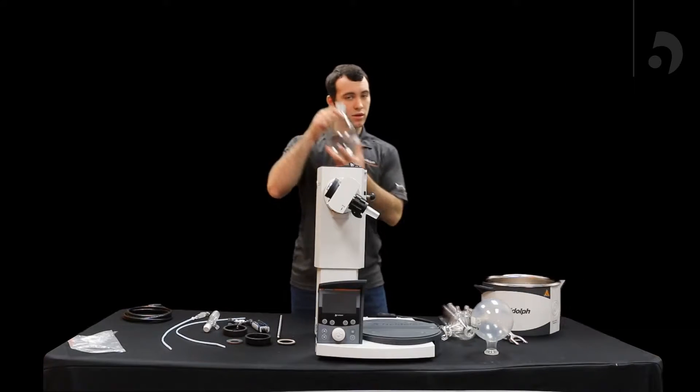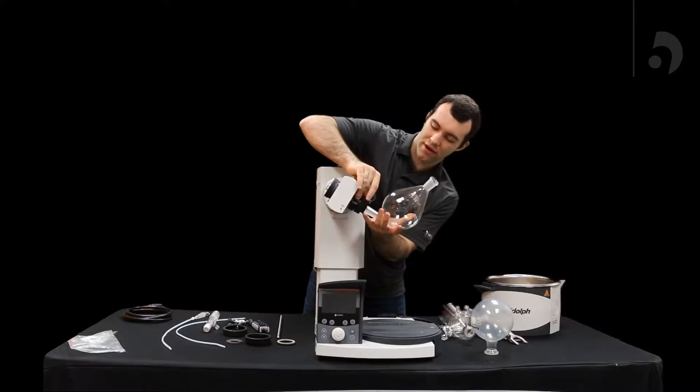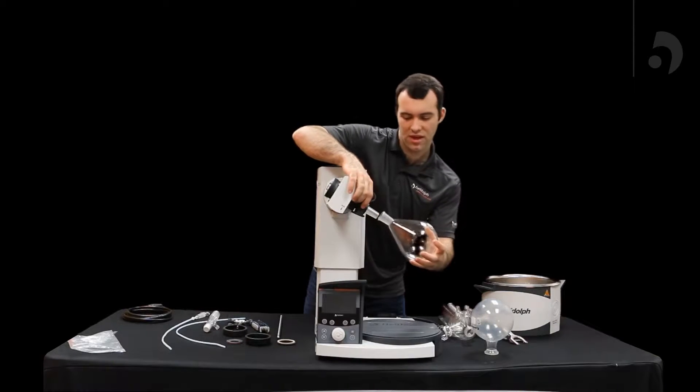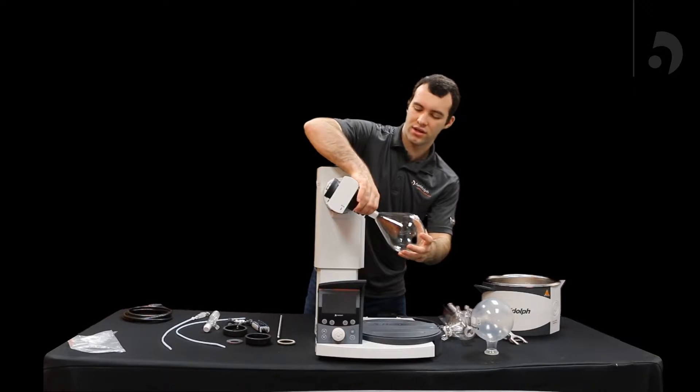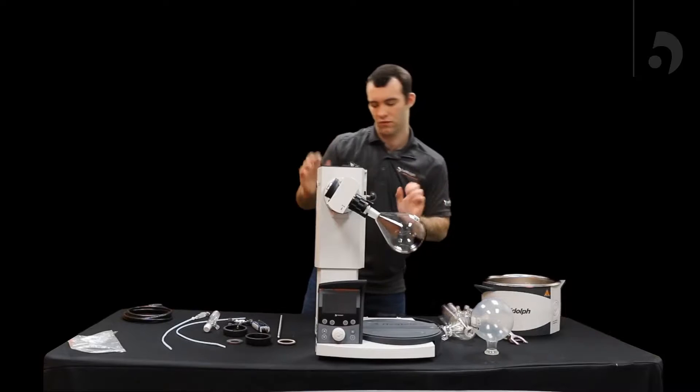Following that, you can grab your evaporating flask, unscrew the bottom half of the swing clamp slightly, slide that on, close the swing clamp, tighten it back, and that won't fall off. Very good.